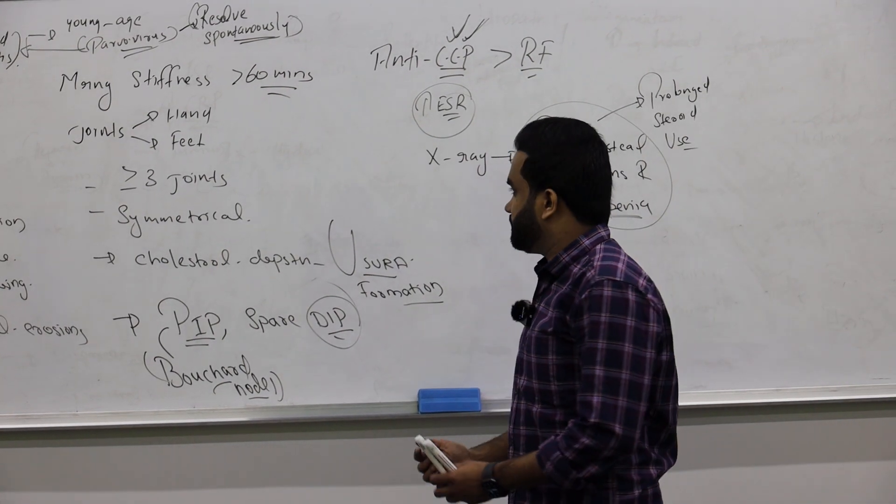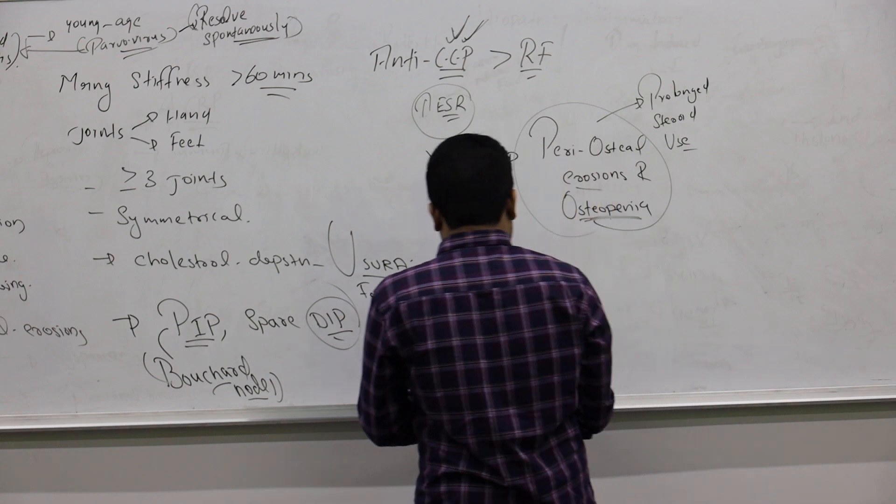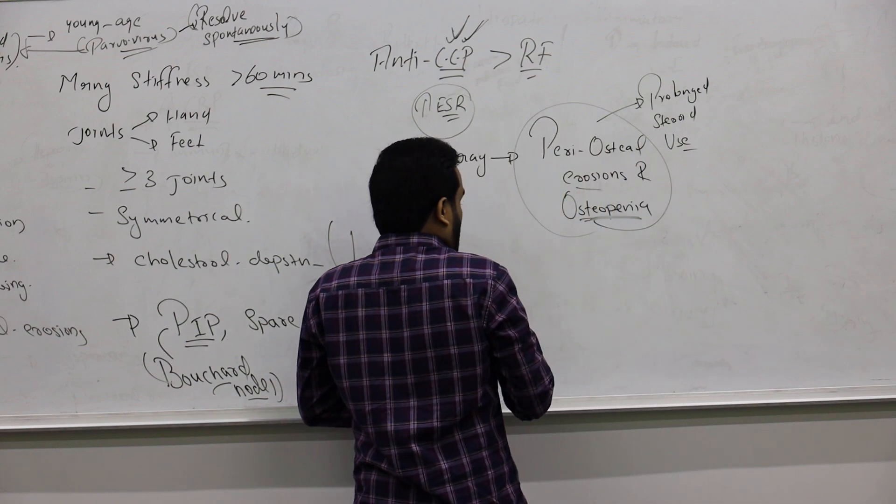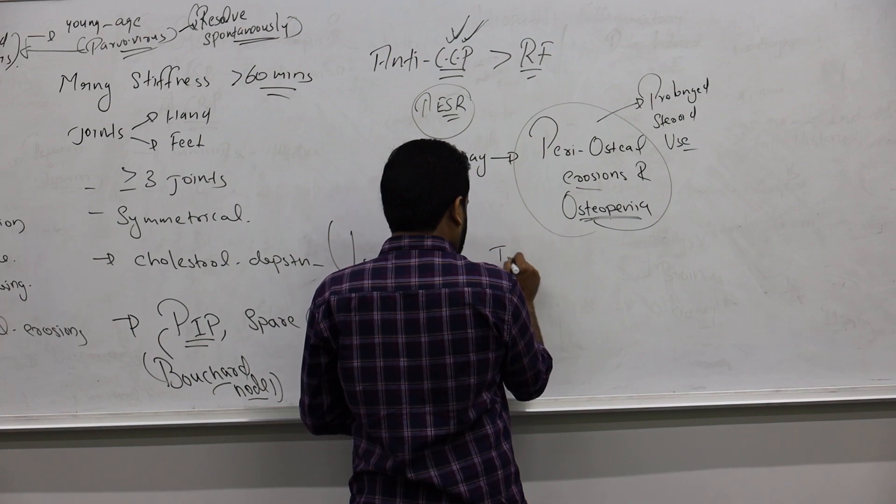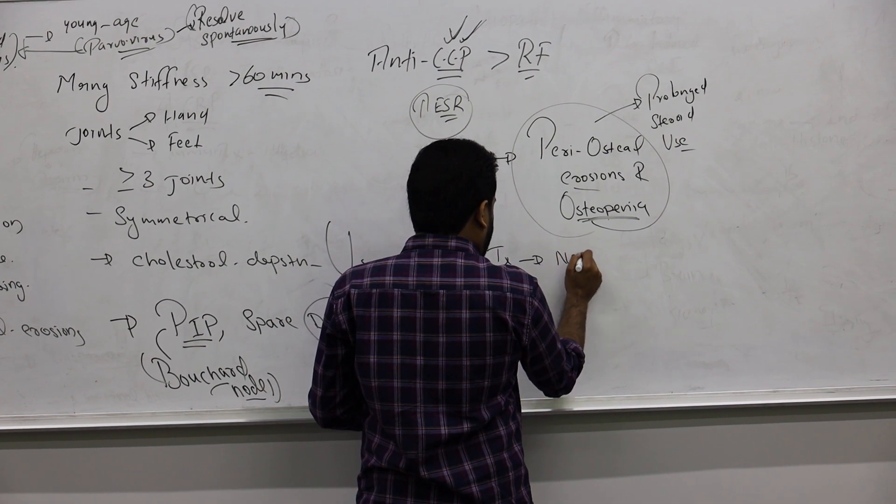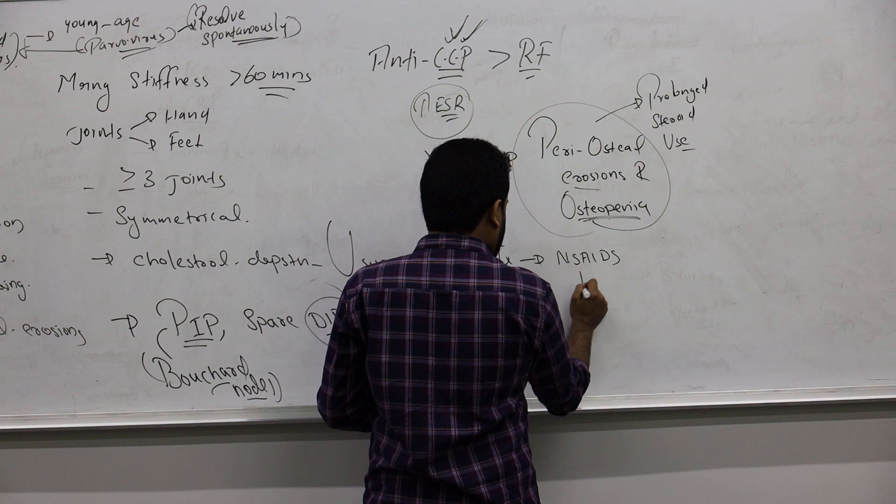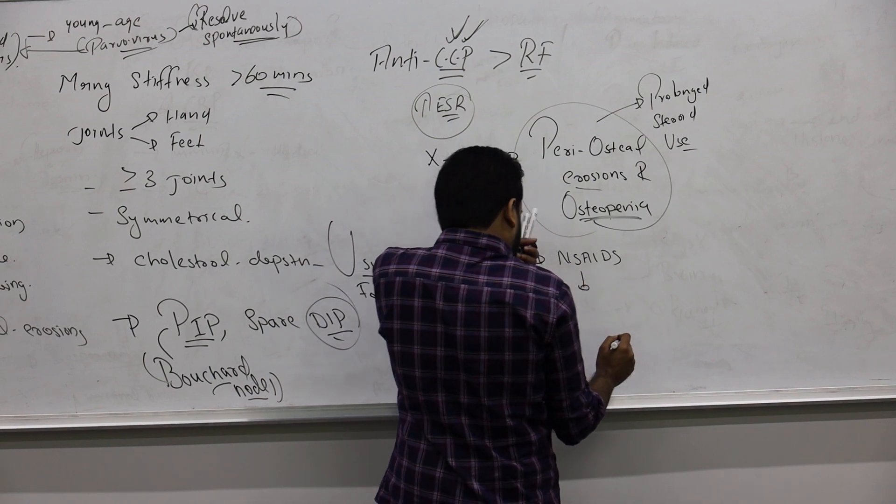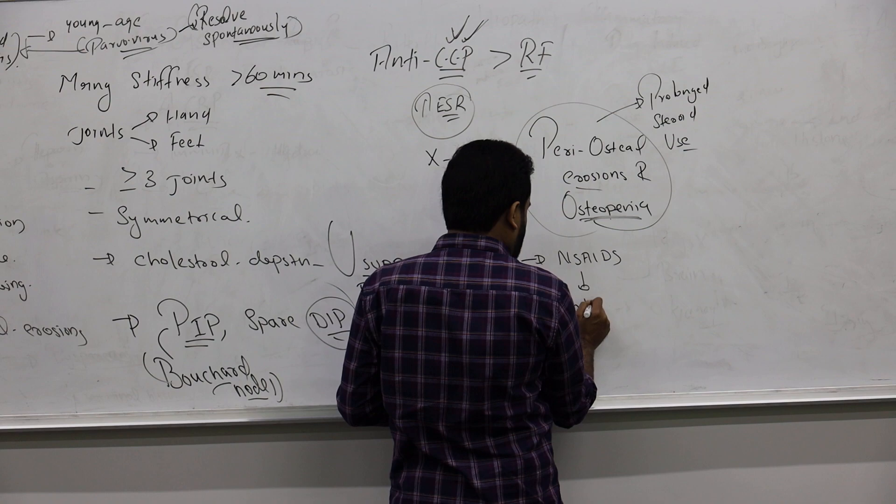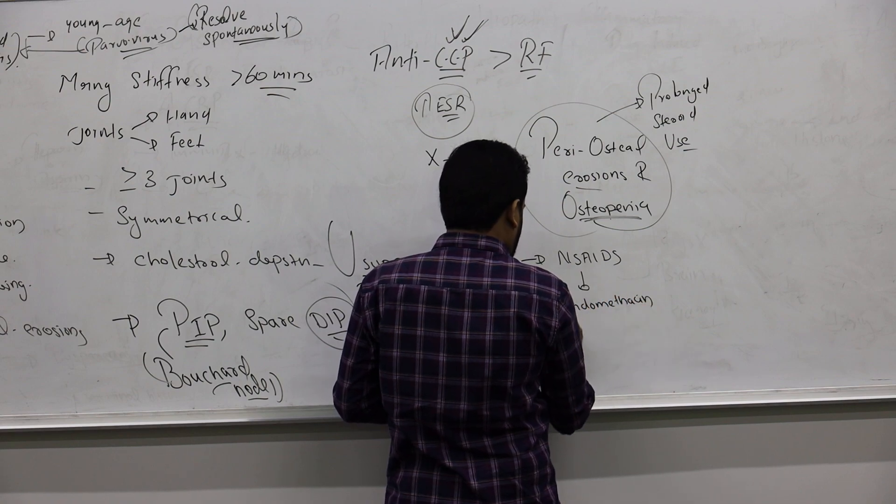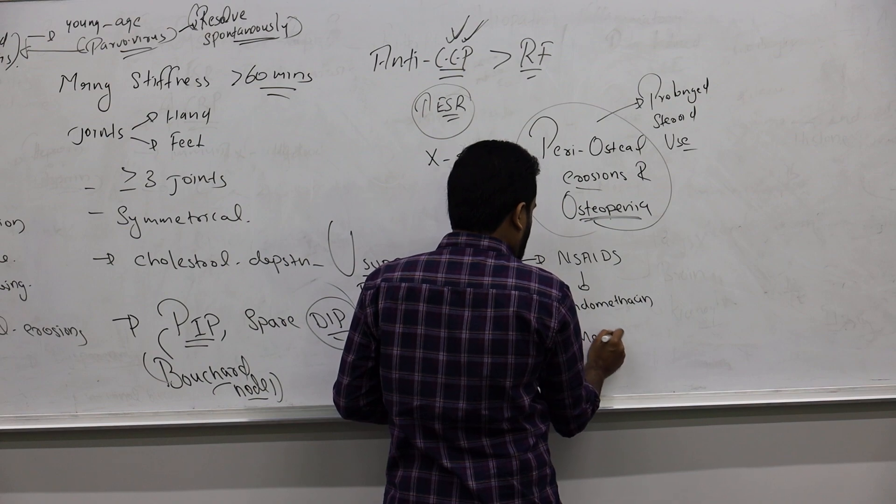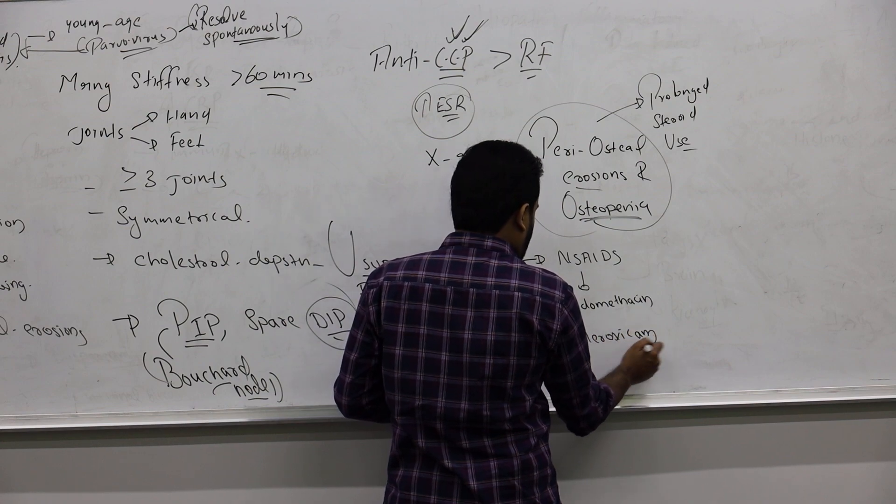Resorption of bone. Now how do you treat rheumatoid arthritis? You give them NSAIDs for sure. You can give like indomethacin, meloxicam, or ibuprofen.